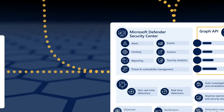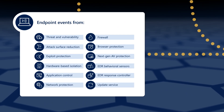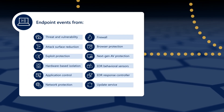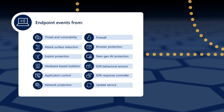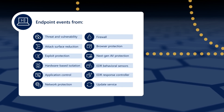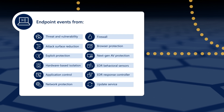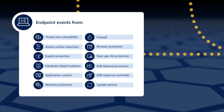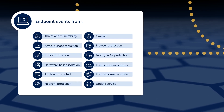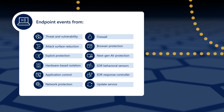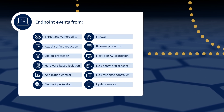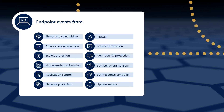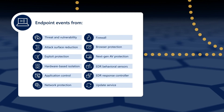The Microsoft Defender for Endpoint sensors gather security-related events from onboarded endpoints and send those events to customers' tenants. The only thing needed is an internet connection, so the service supports almost every conceivable scenario for company-owned devices. Security teams can also trigger endpoints to perform actions like collecting suspicious sample files, isolating from the network, or running a full AV scan.